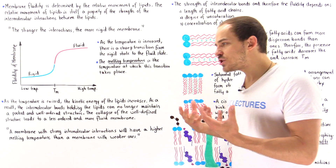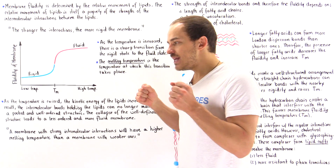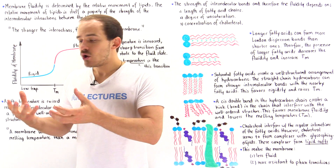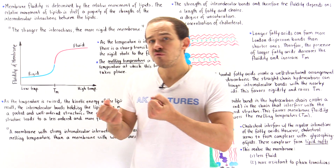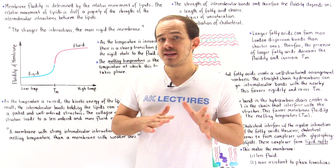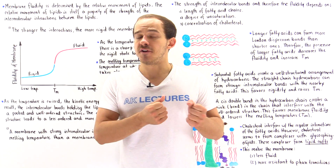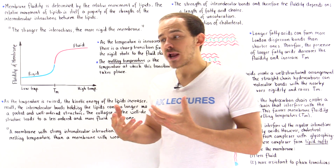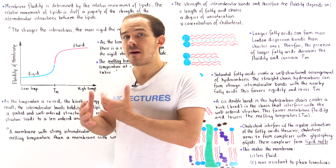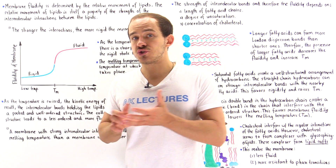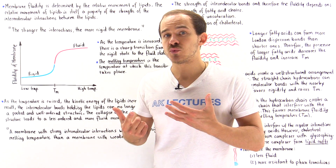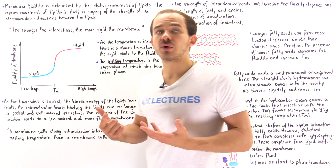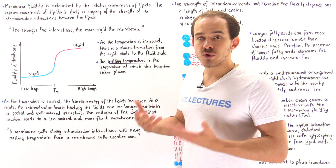In a membrane with more fluidity, we have more movement, which means the attractions are not very strong. But in a membrane where the attractions between the molecules are strong, we're going to have less movement and so the membrane will be more rigid.